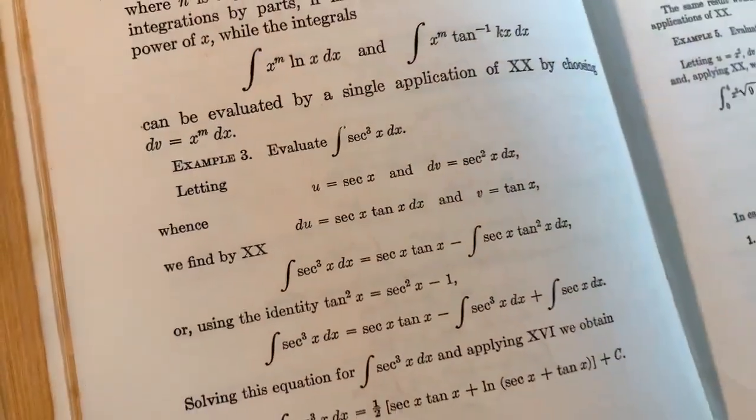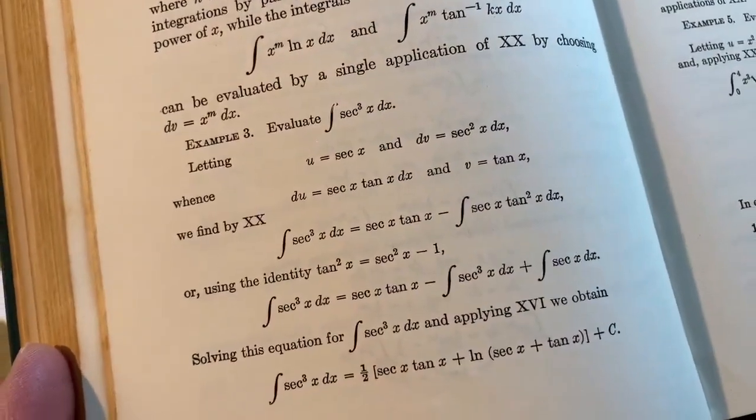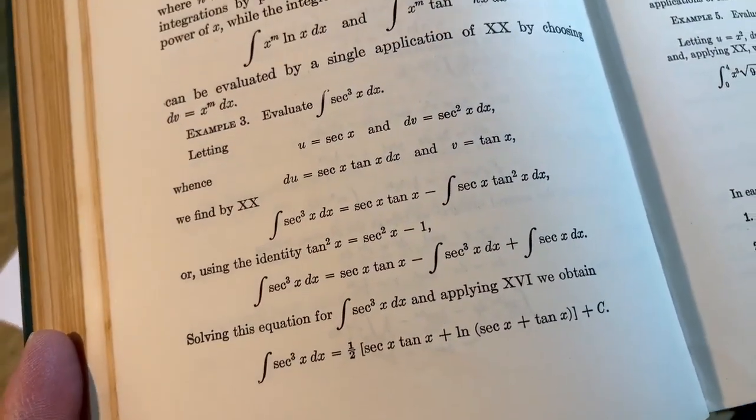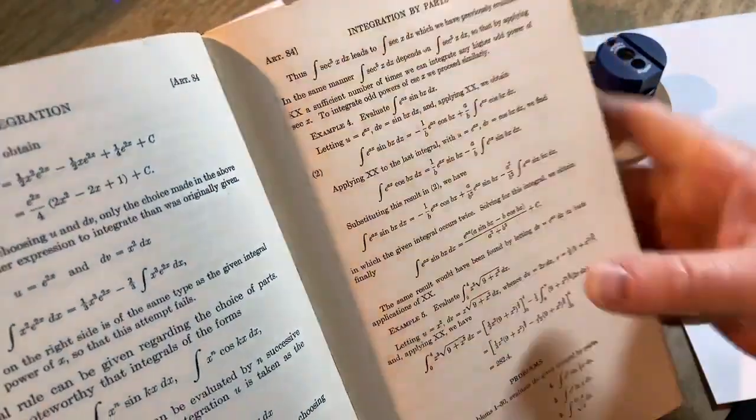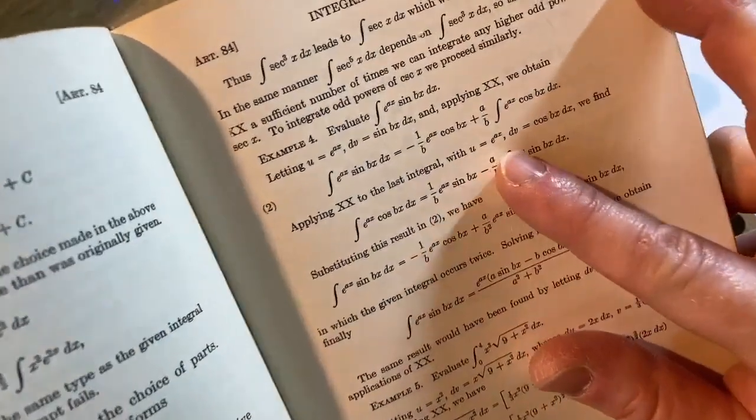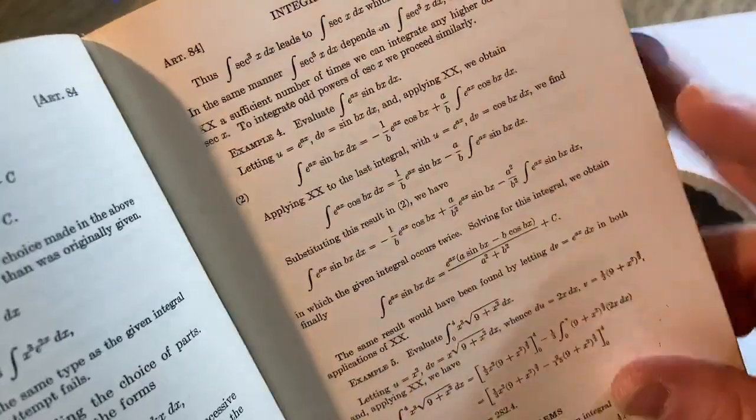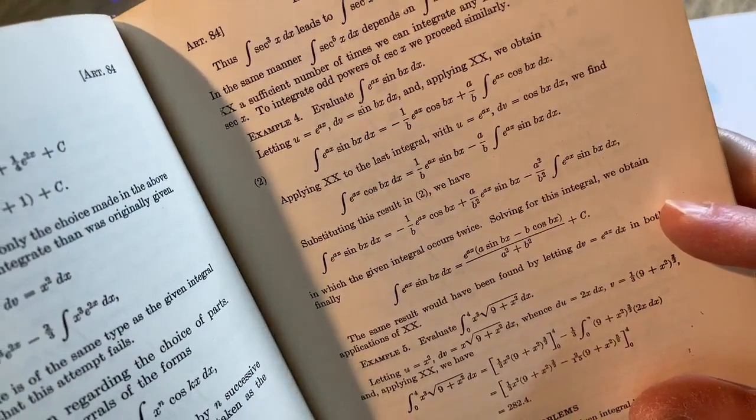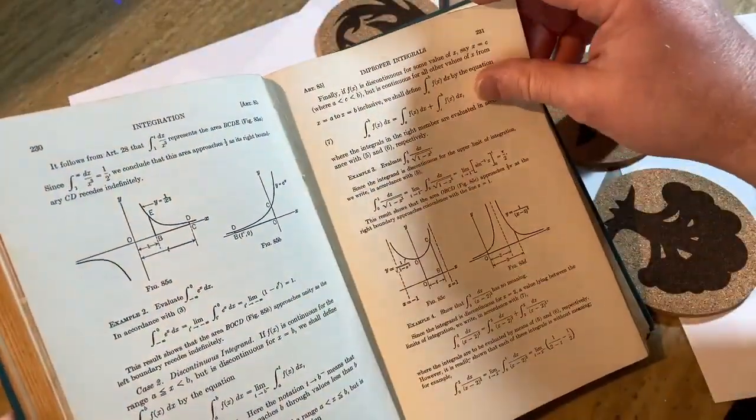This integral here is a famous one. This is the integral of secant cubed. I remember I learned how to do this in a differential equations class. This is a weird one because you have to use integration by parts twice. It's a weird one where they go through the process there. I was just going to say it's very similar to the integral of e to the ax times sine bx. The same idea, but they give that as the next example, which is good. So both of these integrals, I call them loopers because you integrate and you end up with the same thing and then you basically solve for your integral. It's a really weird, interesting process.